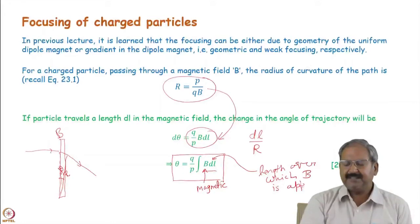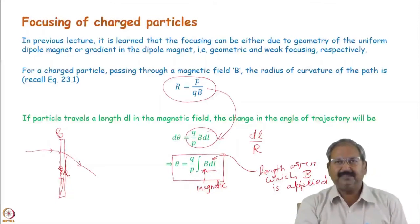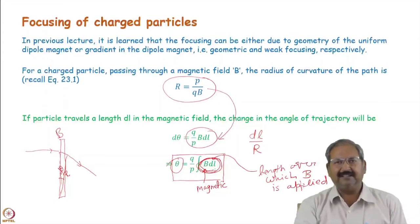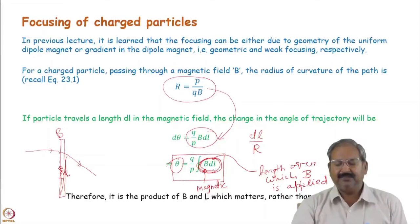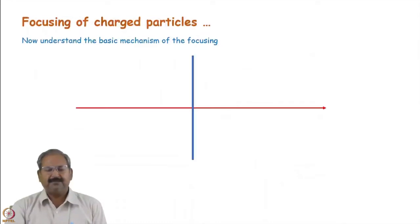We can see that B alone is not sufficient to determine the charged particle trajectory angle. Rather, the combination of magnetic field B and the length over which it is applied — the integrated field B·dl — is what matters. This combination is much more important than B alone for determining particle trajectories.